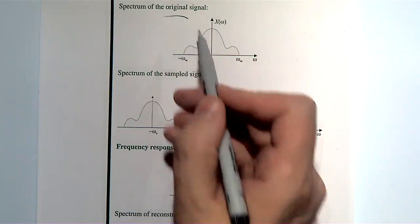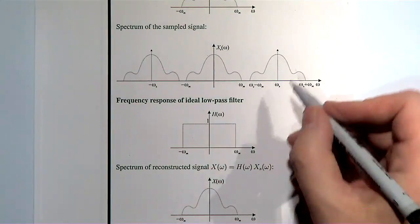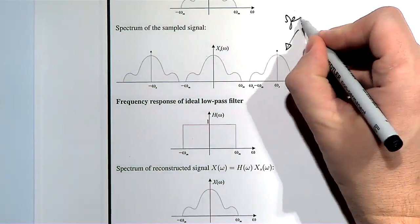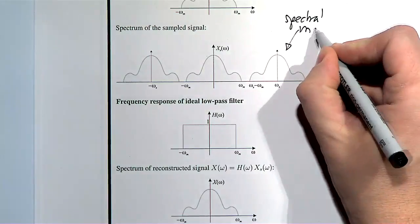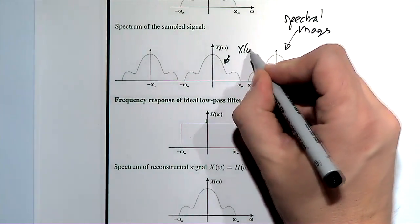So that's the spectrum of the original signal. The spectrum of the sampled signal comes here. Just to repeat from yesterday, these are spectral images. So this is actually the spectrum of the original signal.